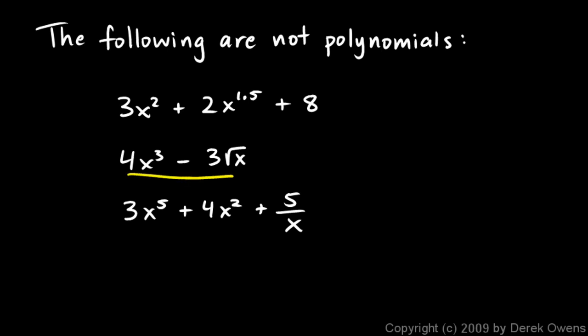The same thing happens in the second one: 4x cubed minus 3 square root of x. Remember, the square root of x can be written as x to the power of 1 half. A square root is the same thing as an exponent of 1 half, so this x to the 1 half is a non-whole number exponent.